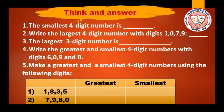Think and answer the following questions on your own. Number 1: The smallest 4-digit number is ___. Number 2: Write the largest 4-digit number with digits 1, 0, 7, 9. Number 3: The largest 3-digit number is ___. Number 4: Write the greatest and smallest 4-digit numbers with the digits 6, 0, 9, and 0. Number 5: Make the greatest and smallest 4-digit numbers using the given digits.